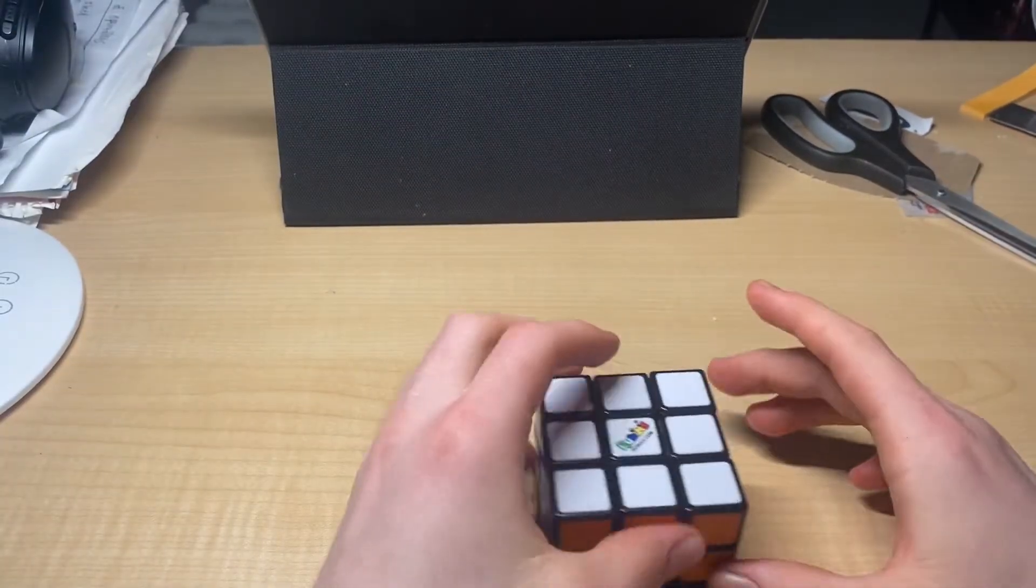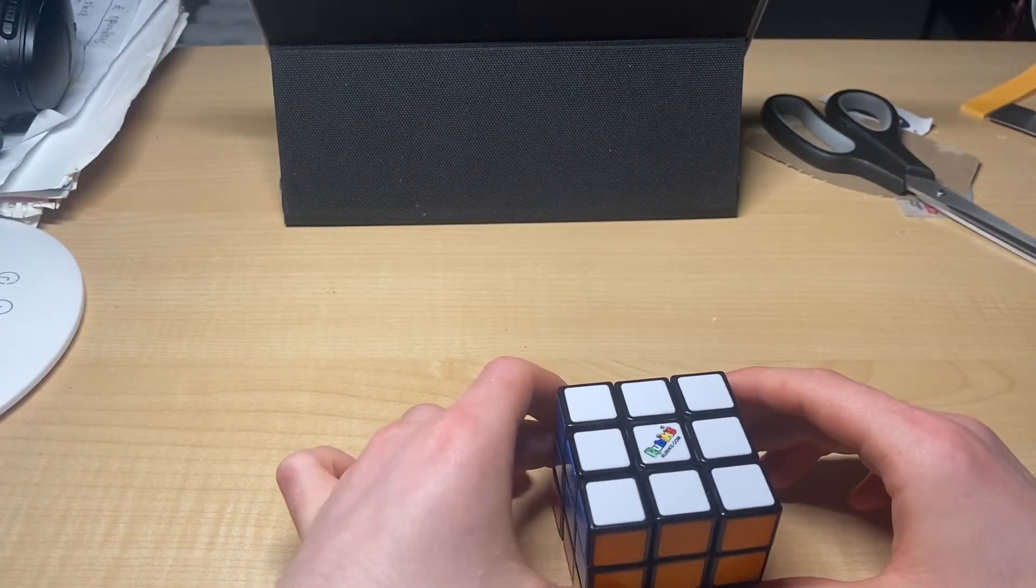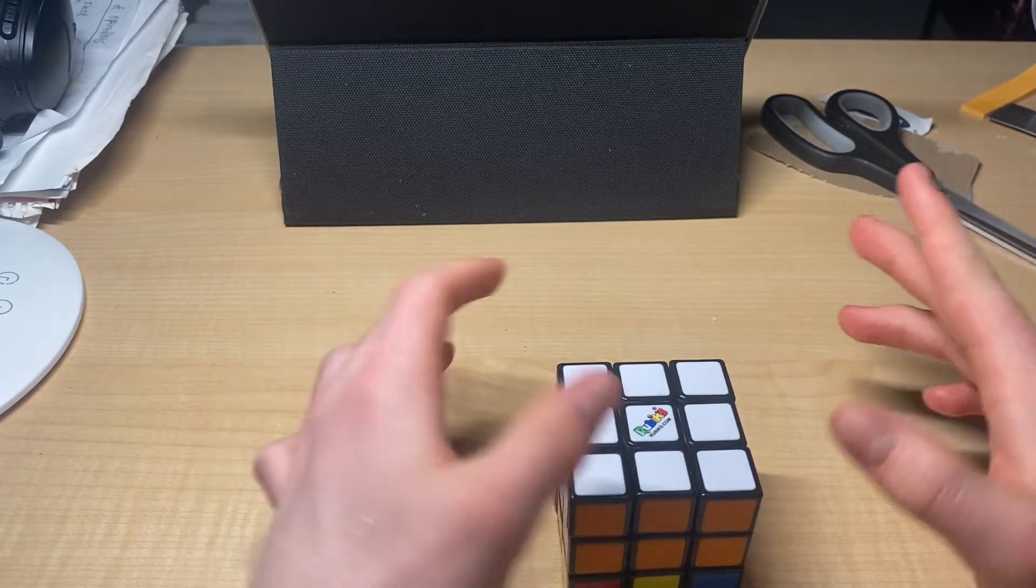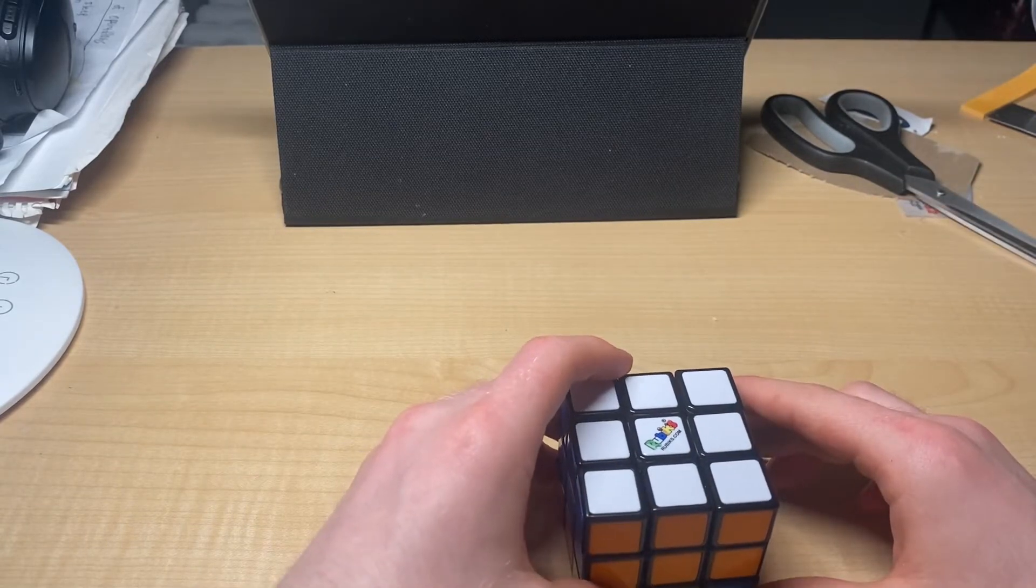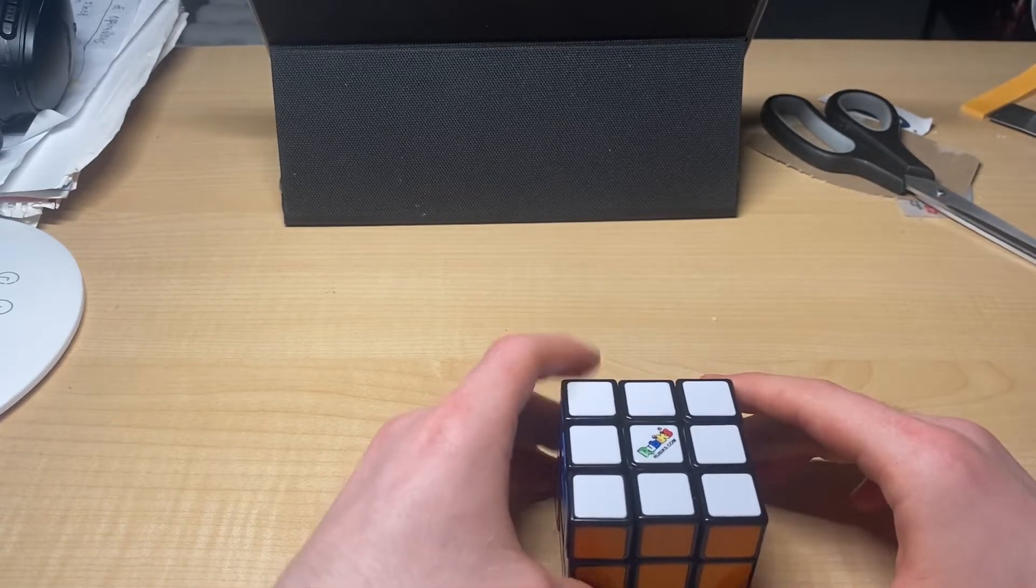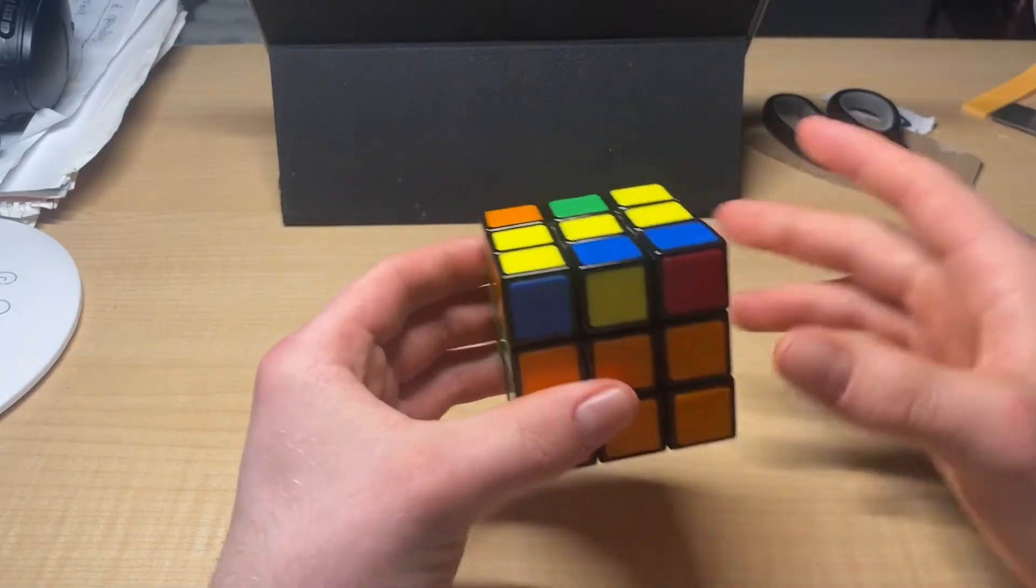Welcome back to the Rubik's series. This is episode 7. This is 2-look OLL, which is the yellow side in two steps.